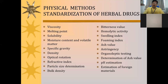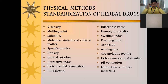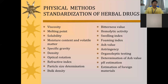These physical parameters are constant for each and every crude drug. For example, sunflower oil has a universally constant boiling point; agar has a constant melting point; gum acacia also has a constant melting point. Other physical constants include bitterness value, hemolytic activity, swelling index, foaming index, and ash value — these will be studied in detail in future lectures.